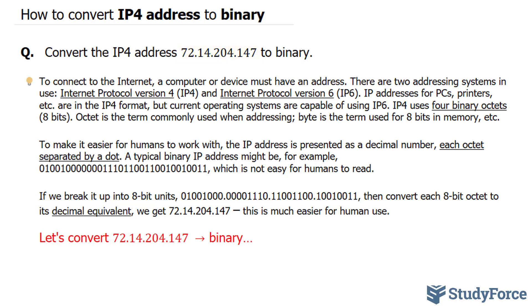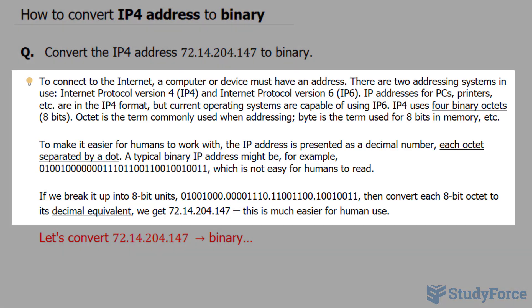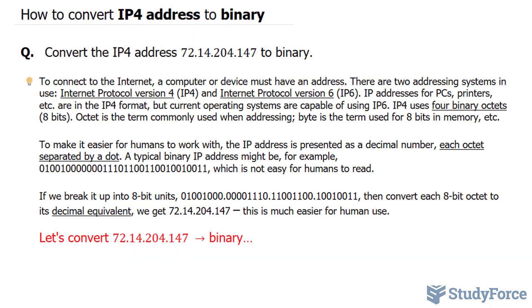So before I show you how to do this, I want to introduce a little bit of theory which you may find interesting. To connect to the internet, a computer or device must have an address and it's either in the IP4 format or IP6 format. IP addresses for PCs, printers and so on are in the IP4 format, but currently operating systems are capable of using IP6 and in a video after this one I'll demonstrate as to why that is.